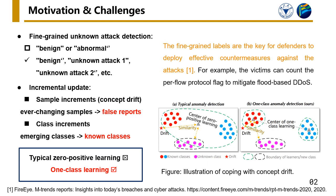Furthermore, another requirement of detection methods is incremental model update, including sample and class increments. To meet them, we propose to employ one-class learning to identify traffic rather than typical anomaly-based methods.